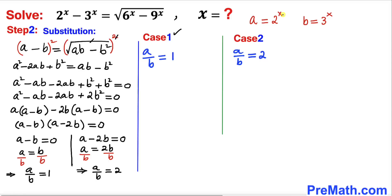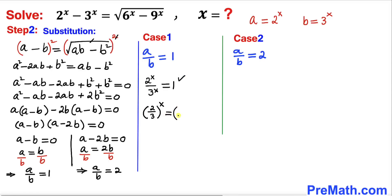For Case 1, substituting a equals 2^x and b equals 3^x gives 2^x divided by 3^x equals 1, which is (2/3)^x equals 1. Since 1 equals (2/3)^0, equating exponents gives x equals 0. This is one of our solutions.